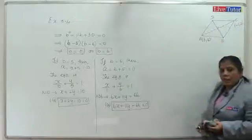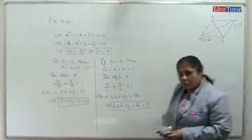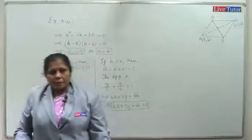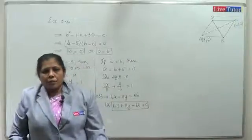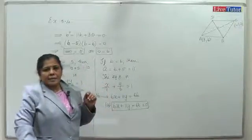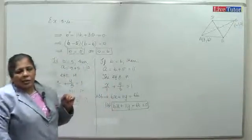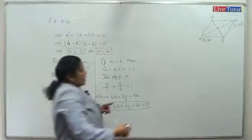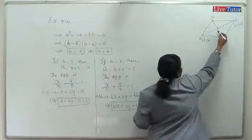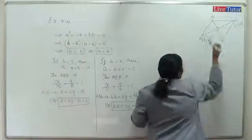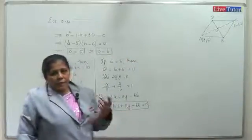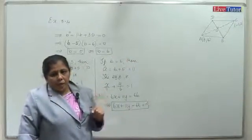The two diagonals of a rhombus bisect each other at right angles. So O is the midpoint of BD and also the midpoint of AC. We know the midpoint of AC, and we can find the slope of AC.